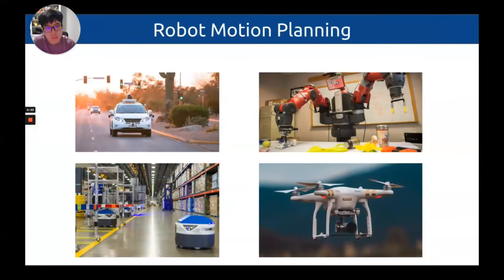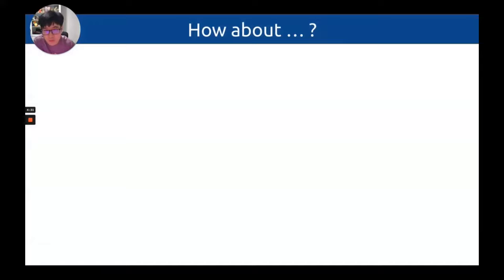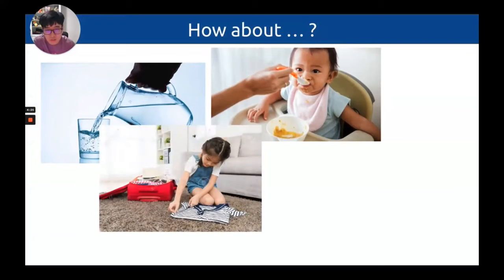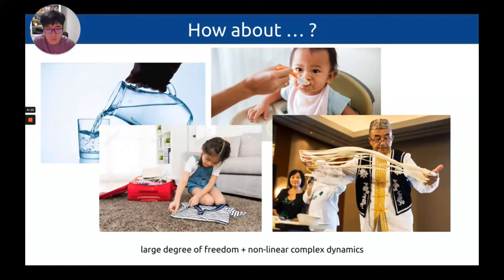Reinforcement learning has been successfully applied to different tasks such as autonomous driving, warehouse robot navigation, manipulating rigid body objects, and flying drones. These tasks share a very well-defined state space. But this doesn't always exist — consider tasks like pouring water, folding cloth, or making noodles. These tasks remain very challenging for robots. The major difficulty is that the large degree of freedom coupled with non-linear dynamics makes modeling the dynamic model and planning with it very difficult.